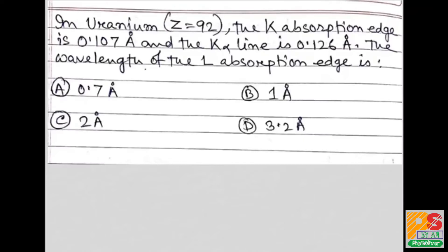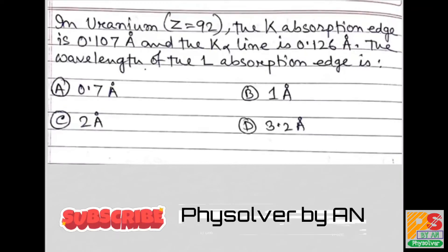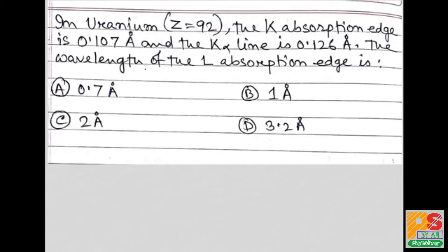Hello students. The question is: in uranium, whose atomic number is 92, the K absorption edge is 0.107 angstrom and the K alpha line is 0.126 angstrom. Find the wavelength of the L absorption edge. Options are given.